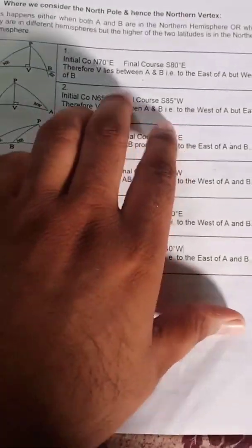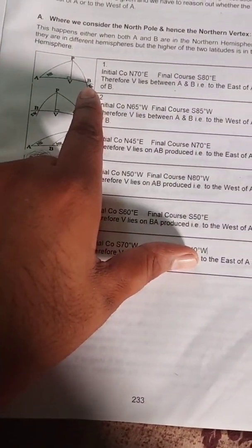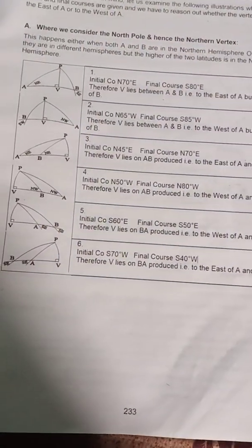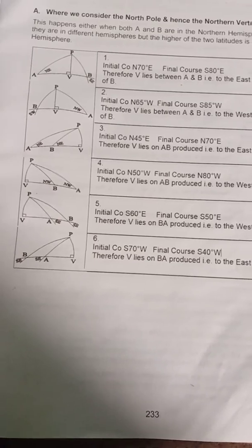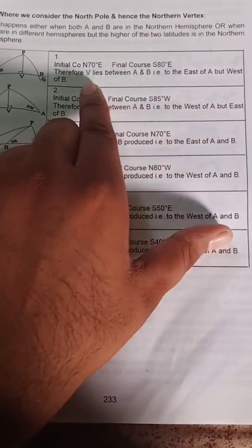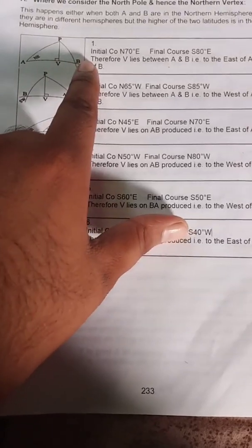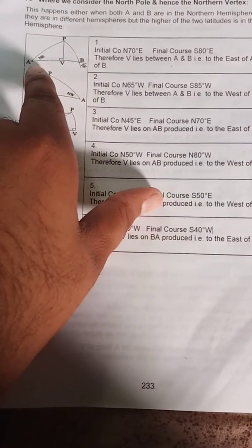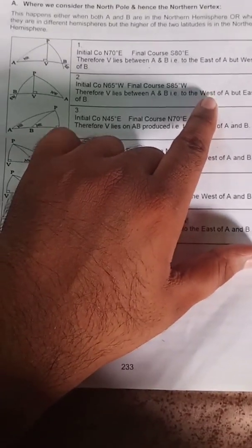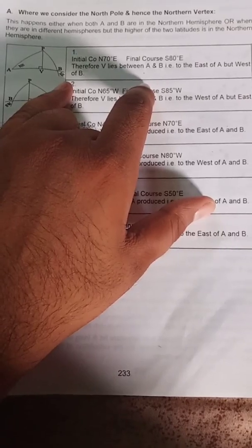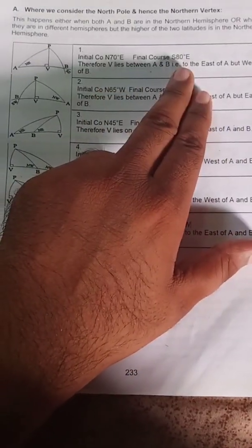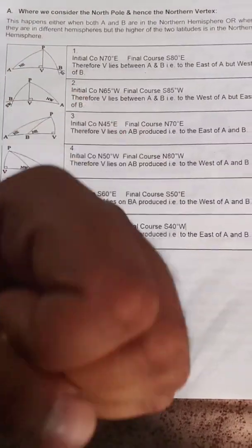If your entire track is in the south quadrant, and we consider the north pole, the vertex will lie in the northern hemisphere. If the initial course is, say, North 70 degrees East and the final course is 80 degrees East — both in different sub-directions — the vertex lies between A and B. If the course is exactly 90 degrees, then both sides are 90 degrees, meaning the vertex lies to the east of A and west of B.